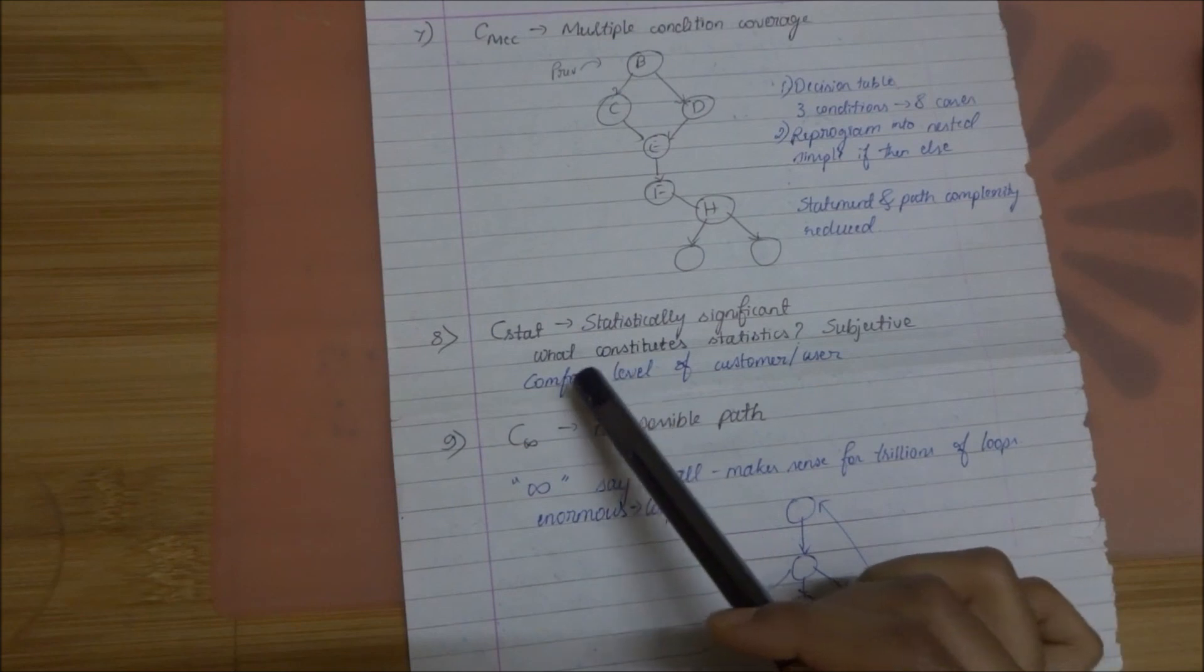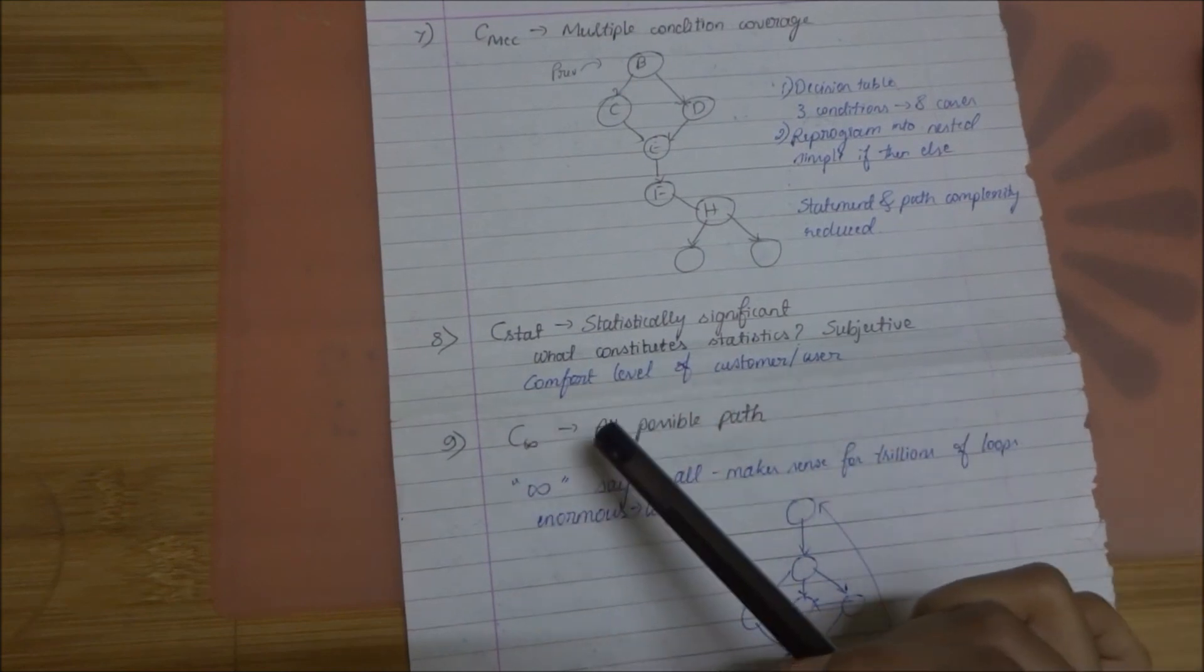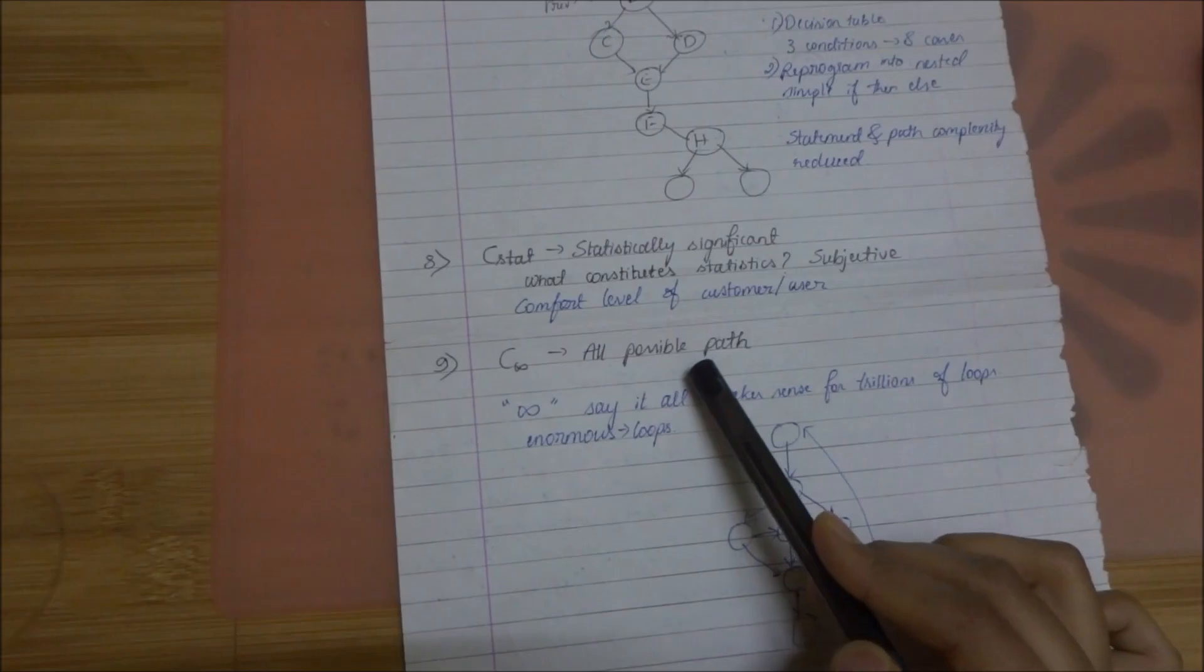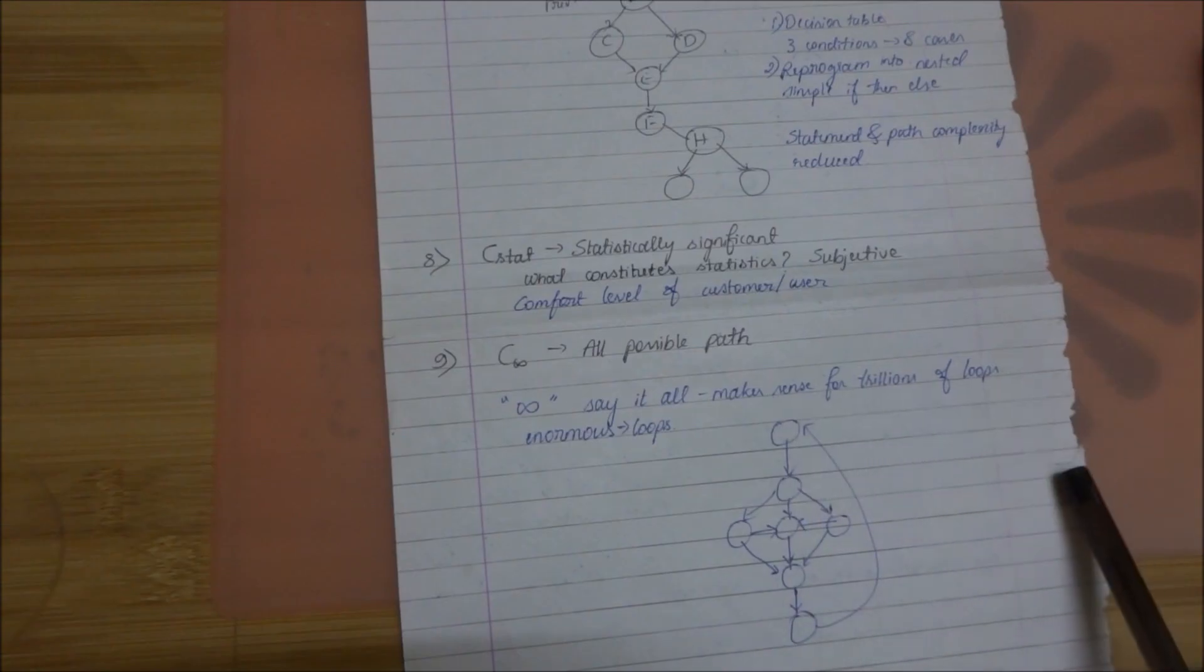C-infinite. The infinity represents all possible paths. It makes sense for a program having trillions of loops.